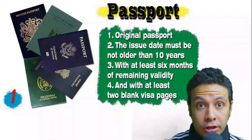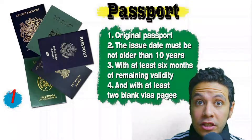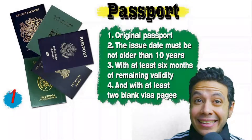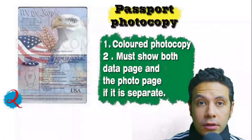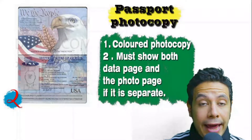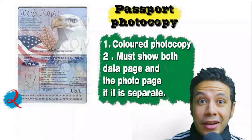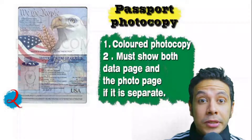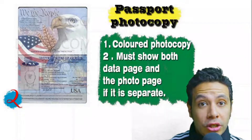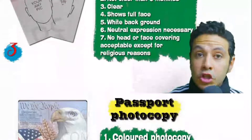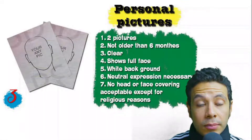For the passport, it must be original, not older than 10 years, with at least six months of remaining validity and at least two blank visa pages for stamps. You will also need passport copies — usually one, but sometimes more — preferably in color, showing both the data page and the photo page. In some cases you may need to photocopy every page, but generally only the data and photo pages are required.